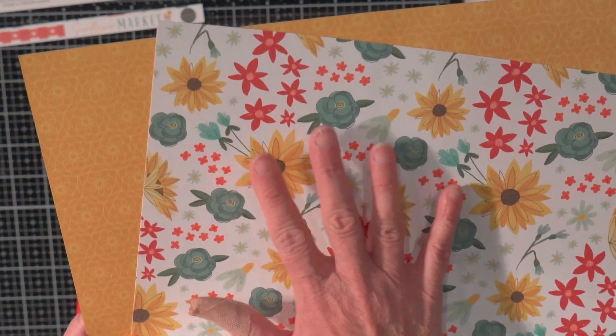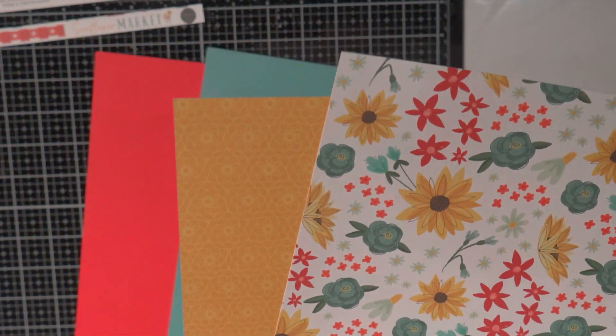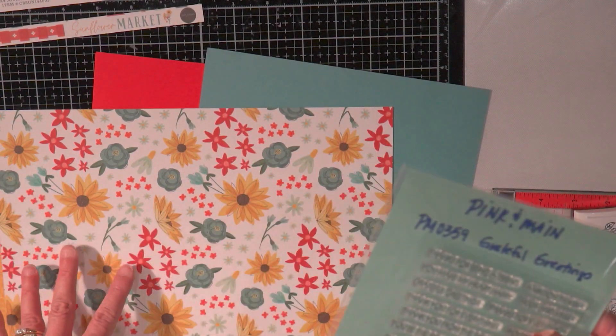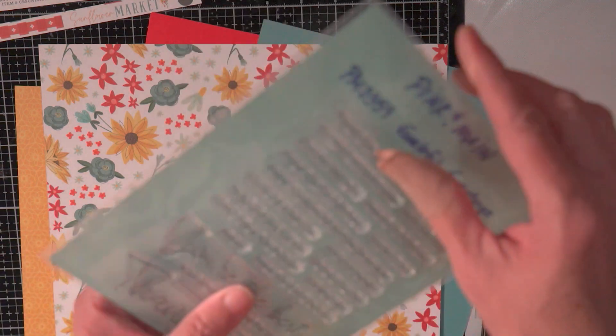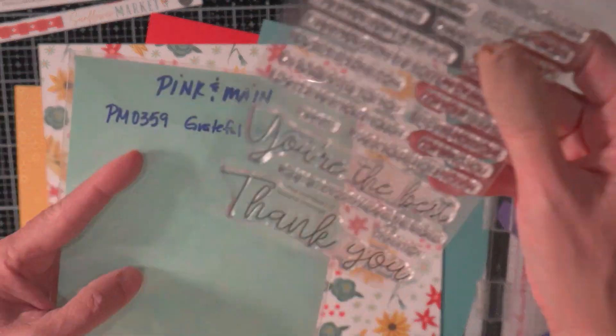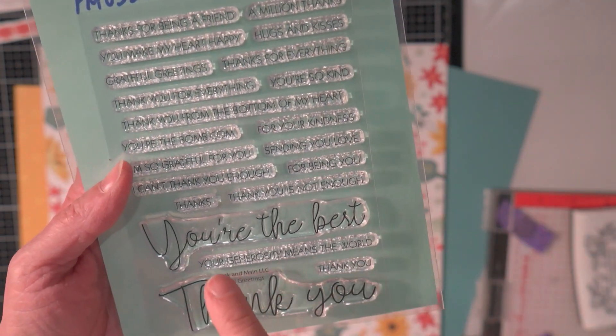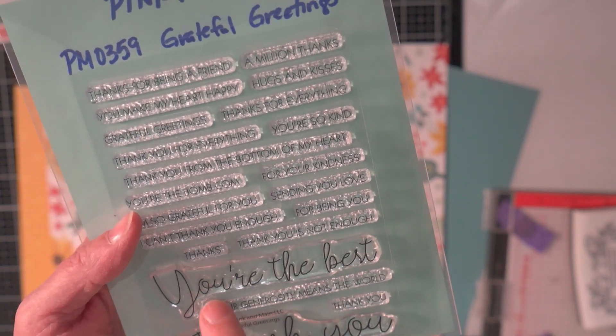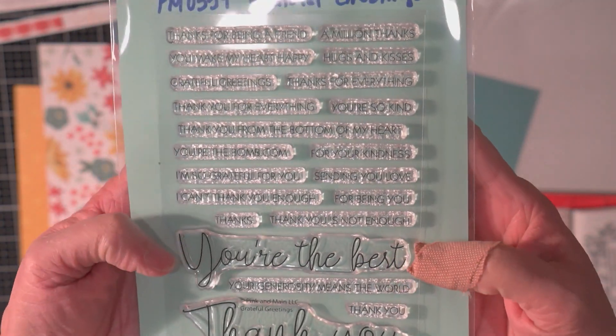So I pulled out this paper I thought it was nice and springy and I think the stamp set that I'm going to use, I kind of flip through my paper and think about what theme that I want to do. I've got a bunch of Christmas cards so I don't think I need Christmas cards. And then the next thing I did was I went through my stamps and this is from Pink and Maine called Grateful Greetings. I love this you're the best and the thank you is cute too but I think the you're the best is something that I can use year-round so I thought that was good.